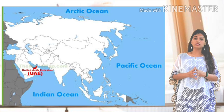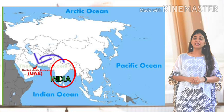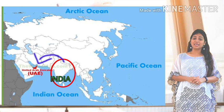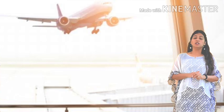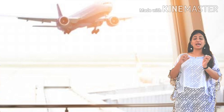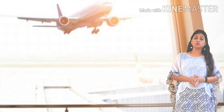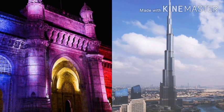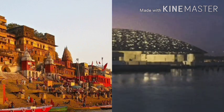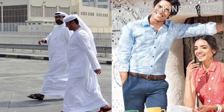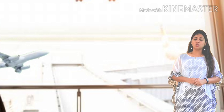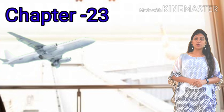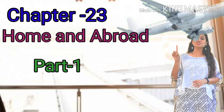UAE is located to the west of India and its capital city is Abu Dhabi. In today's chapter, we shall learn about dissimilarities and similarities between people, places, climate, clothing, housing, etc. of India and UAE. So kids, let's begin with chapter number 23, Home and Abroad, part 1.